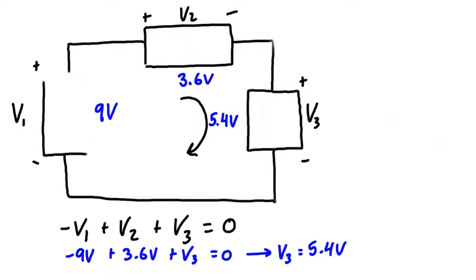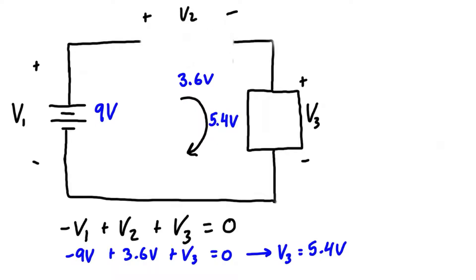Now let's say instead of generic elements that v1 is a voltage source and that v2 is a resistor and same with v3. And if we knew that the current, let's say was 1.8 amps, then if you wanted you could find the individual resistances of each resistor using Ohm's law.